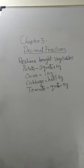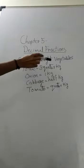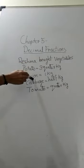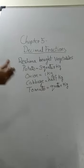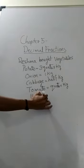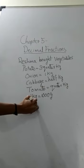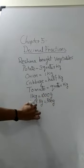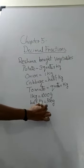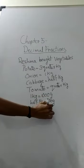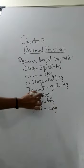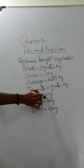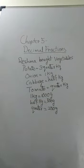The next example deals with kilogram and gram, so there will be 3 decimal places. Reshma bought vegetables: potato 3 quarter kg, onion 1 kg, cabbage 1 half kg, and tomato 1 quarter kg. You know that 1 kg equals 1000 gram. Half kg will be half of 1000, that is 500 gram. Quarter kg means half of half kg, that is 250 gram. So: 1 kg = 1000 g, half kg = 500 g, quarter kg = 250 g.